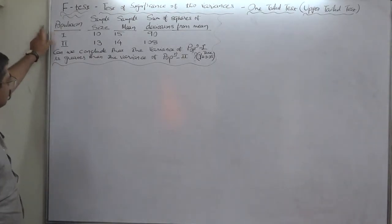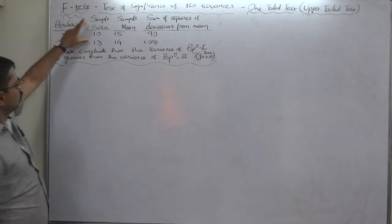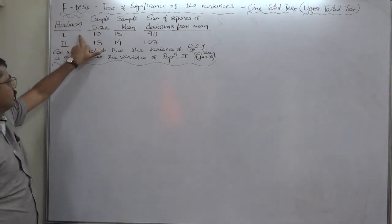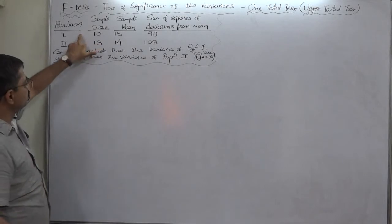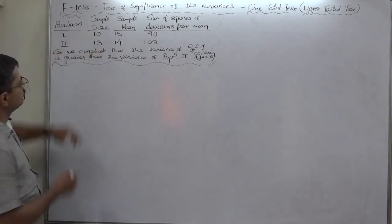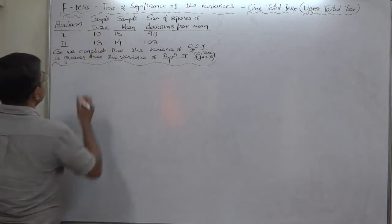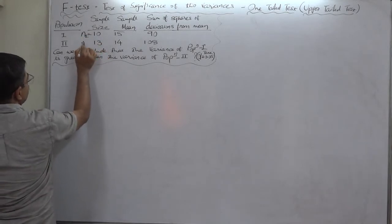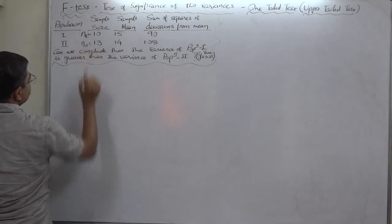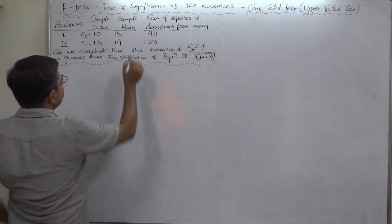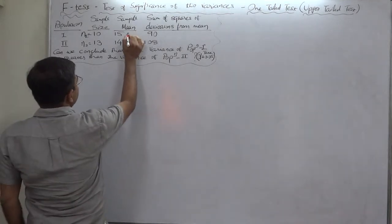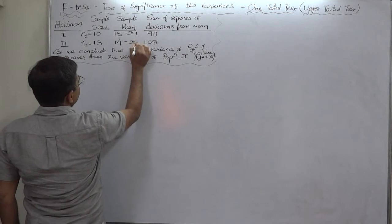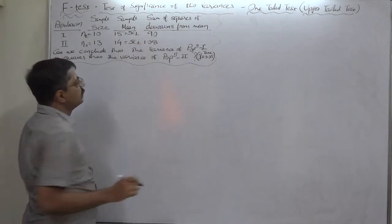There are two populations, number one and two. One sample from each population is drawn. The size of the first sample is 10, so n1 = 10, and n2 = 13. The sample mean of the first sample is 15 and the second sample is 14.